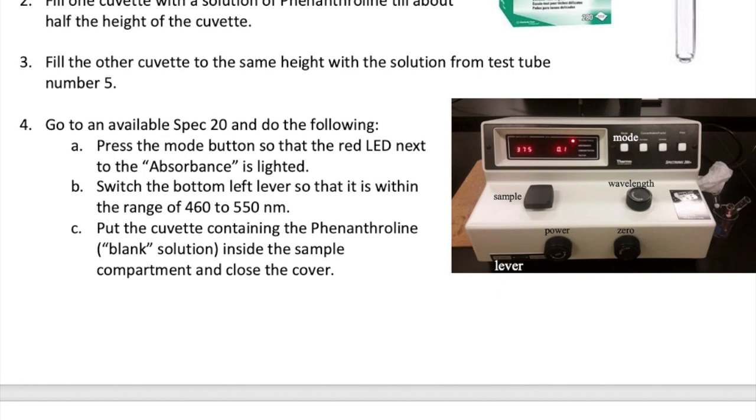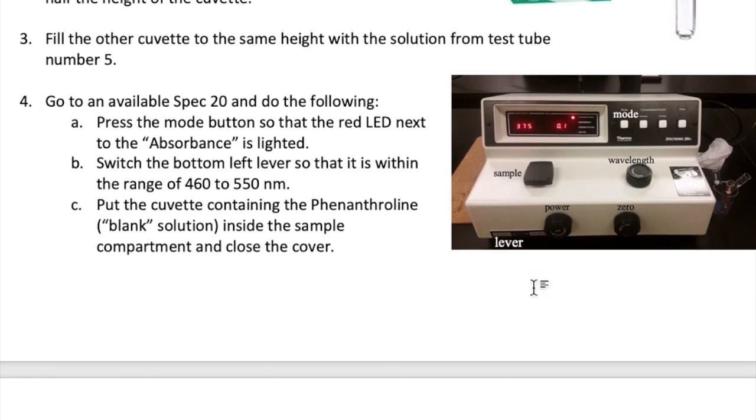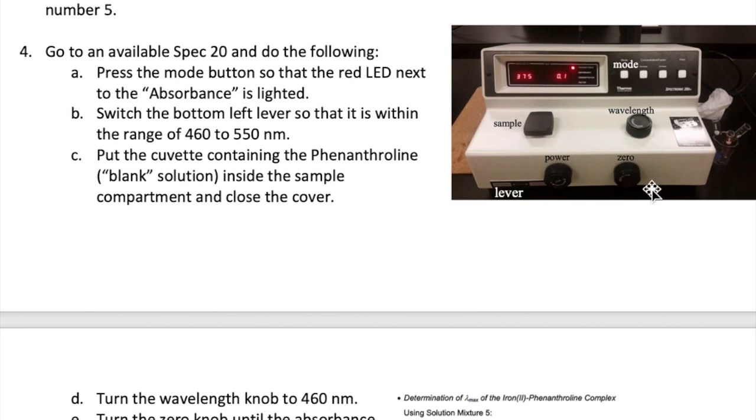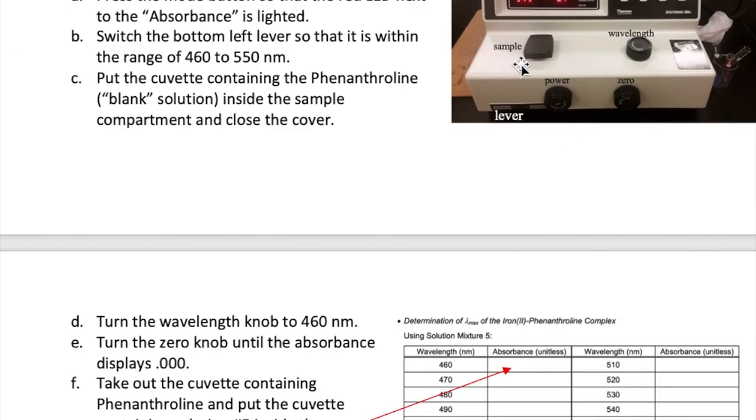Next, take the cuvette that has Phenanthroline in it and put it inside the sample compartment and close the cover. Adjust the wavelength using this knob until it reads 460 here. Then adjust the zero knob until the absorbance reads 0.000. You may need to turn this knob clockwise or counterclockwise for a bit before you see 0.000 absorbance. The process you're doing here is called blanking the spec. This is analogous to taring a balance to set it to zero. In other words, we're calibrating the spec.